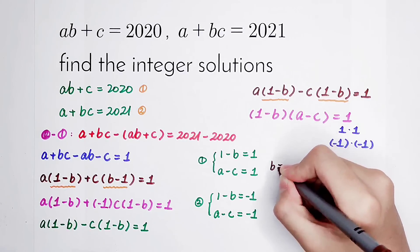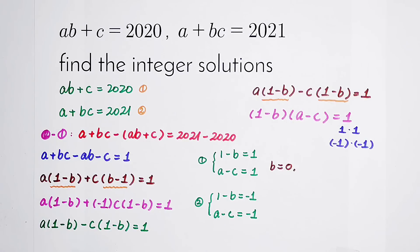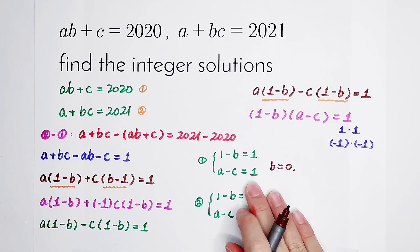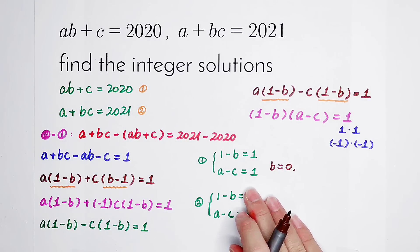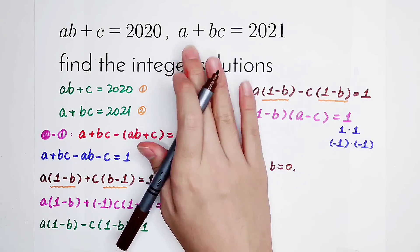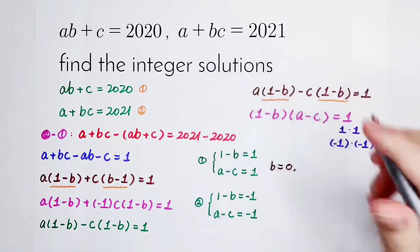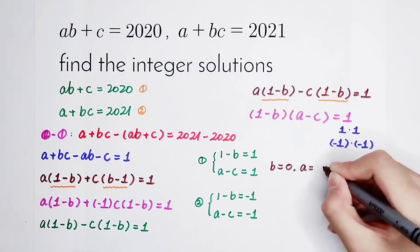B is 0. It can be solved easily. And A minus C is 1. Because B is 0. So A plus 0 times C is 2021. Then the value of A is 2021.